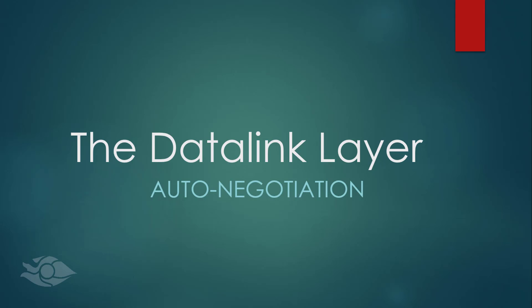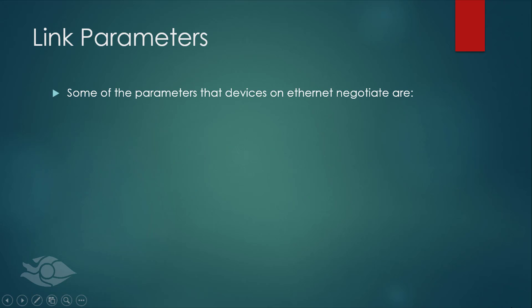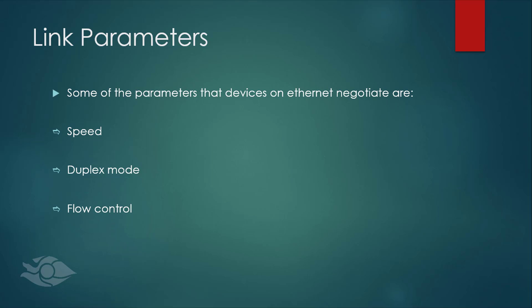Hello guys, welcome to my presentation on the data link layer, and we'll talk about auto-negotiation. Some of the parameters that devices on Ethernet negotiate are speed, duplex mode, and flow control. Only the speed and duplex modes will be discussed in this presentation.